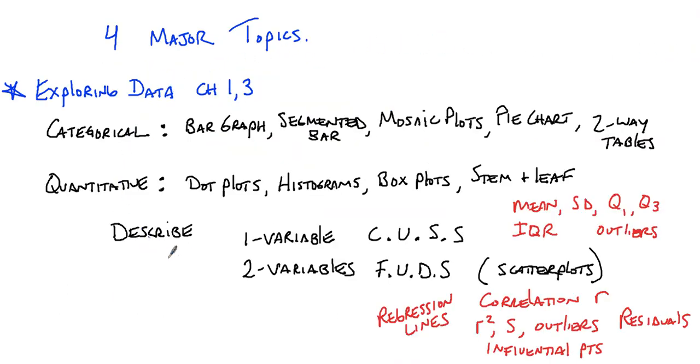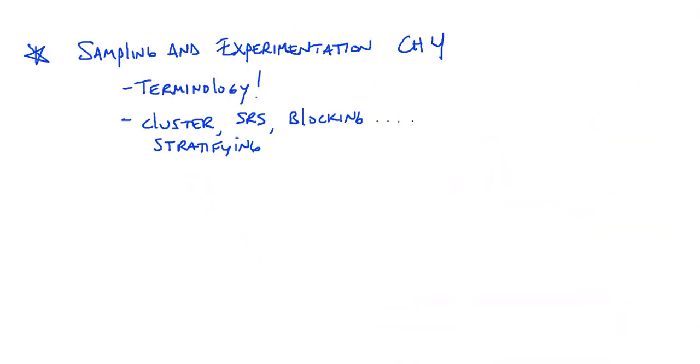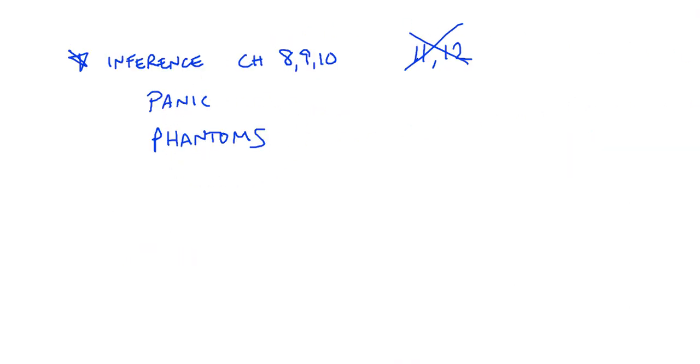And then the fourth topic is inference. And that is what we covered in chapters 8, 9, and 10. So we no longer have to cover chapters 11 or 12. Those would have also been on inference, but they took those off of the AP test. Inference is panic and phantoms in a nutshell. So I think you're going to be guaranteed to have a problem where you have to make a picture and talk about it. I could see them tying in the picture and the data in with a panic or phantoms problem, so they could cover those two topics in one.